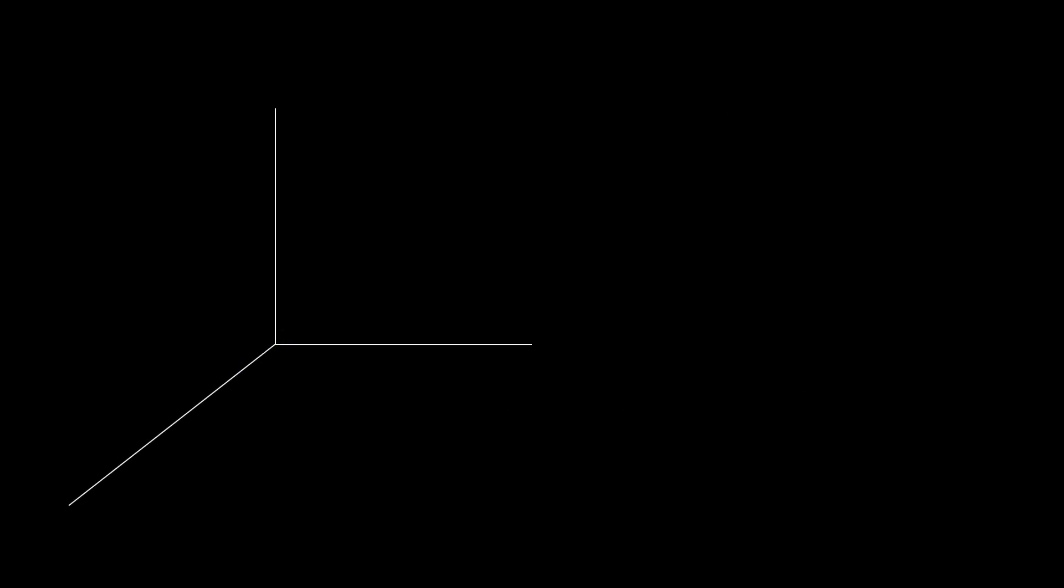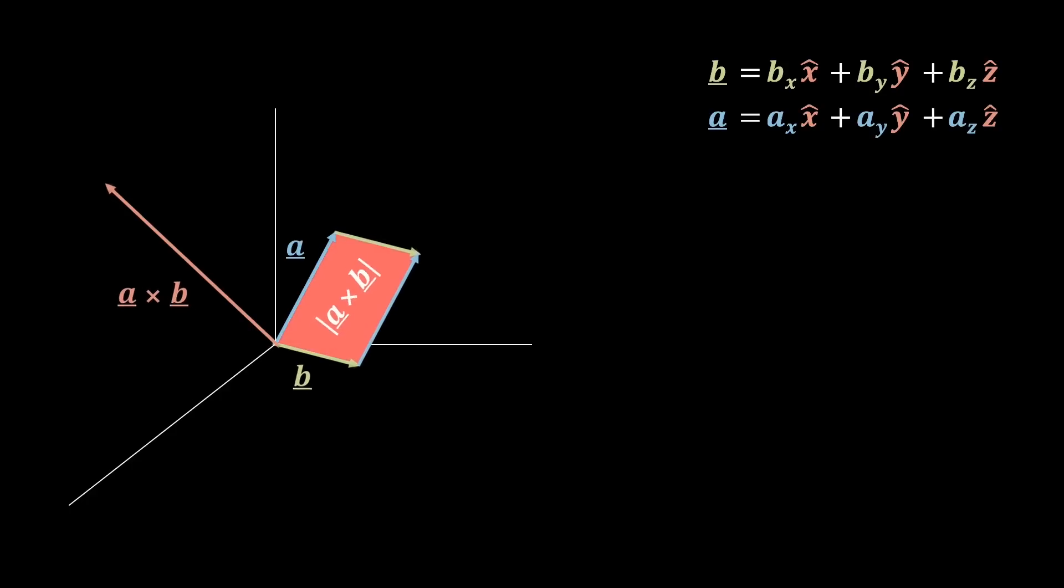Next, we are going to consider the cross product. This is an operation that returns a vector. So say we have a cross b here, in the red, this will be 90 degrees, or orthogonal to a and b. And if you were to take the size, or magnitude, of a cross b, this is actually the same as the area between a and b, if we create the parallelogram.